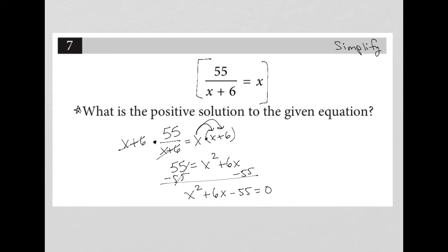This allows me to solve for x. I want two values that multiply to give me negative 55 and add up to 6. So that would be a positive 11 and a negative 5.